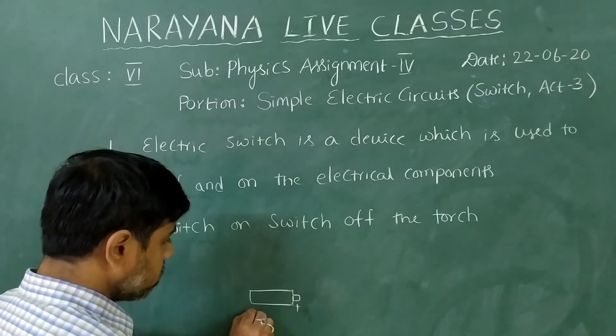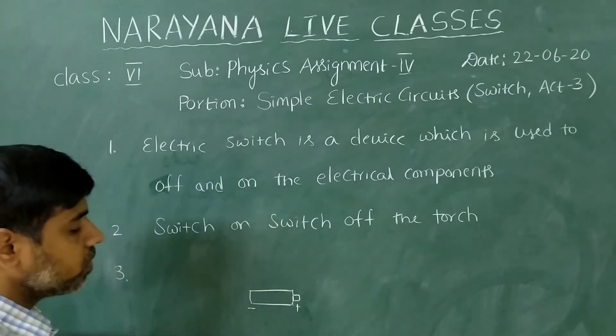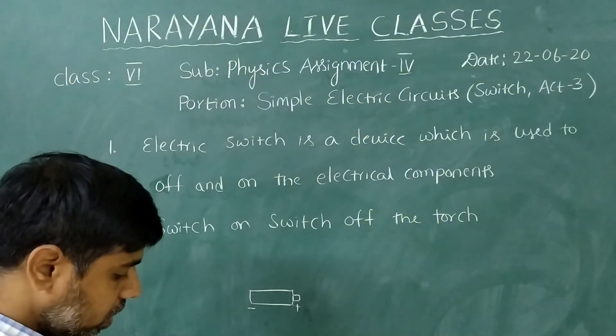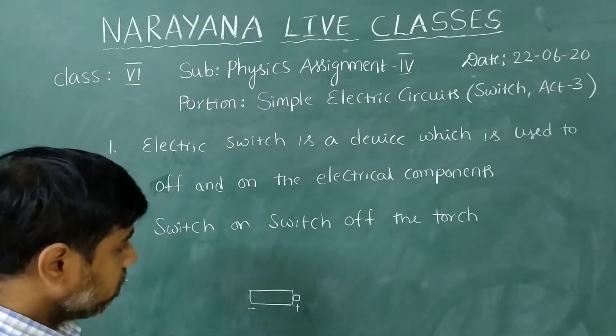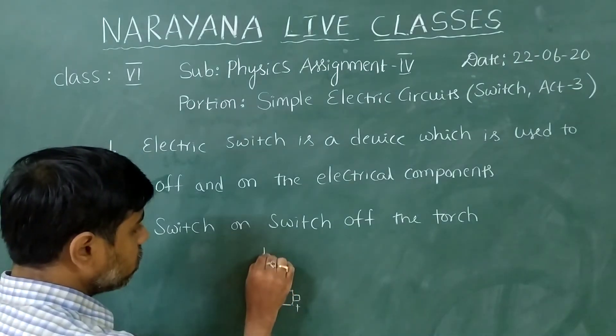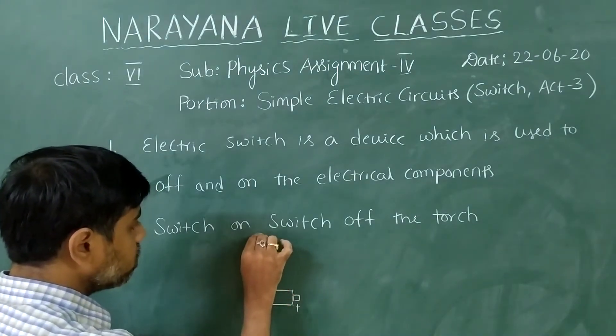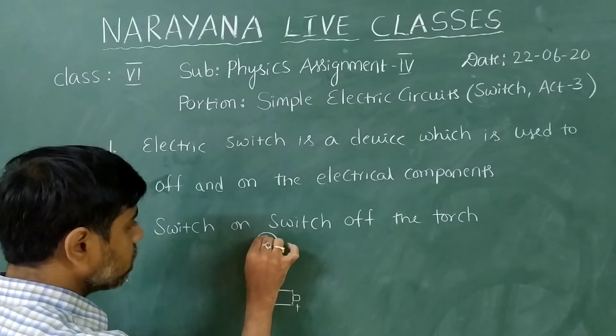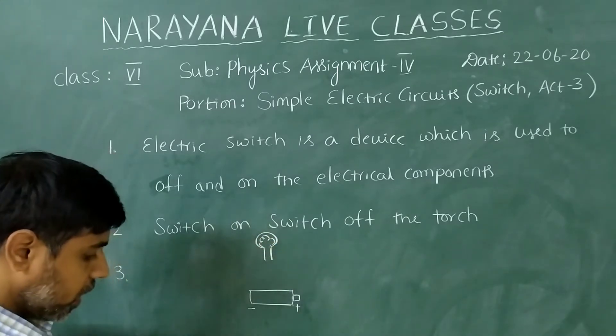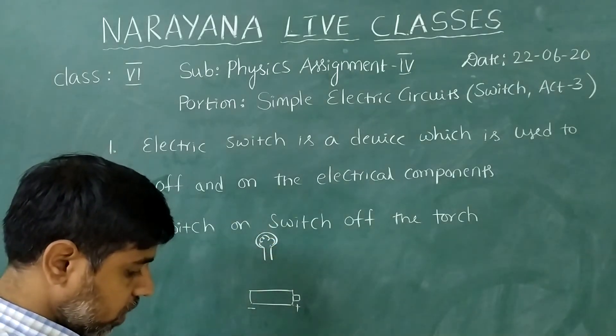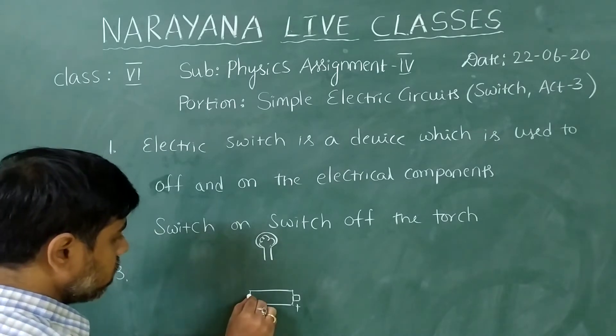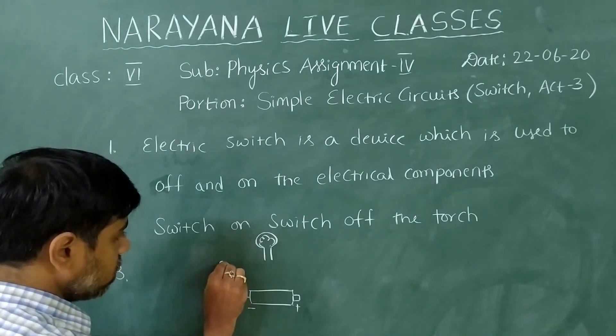We know that this is the positive symbol, this is the negative terminal of the cell and then bulb, we need to connect a bulb. So let us assume that this is a bulb. This is the filament of a bulb, and then a switch on connecting wires.